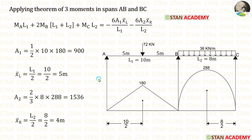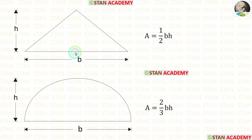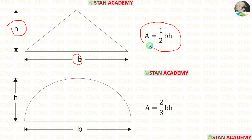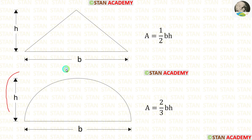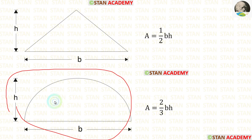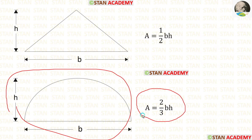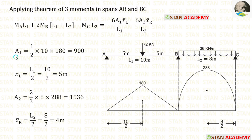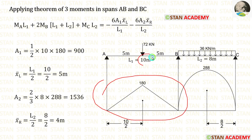Now let us see the formulas to calculate the areas. If a triangle is having breadth B and height H, the area formula is 2/3 × breadth × height. For a parabola made by a second-degree curve, the area formula is also 2/3 × breadth × height. For this triangle, the breadth is 10 meters and the height is 180. We can apply these values and finally we are getting 900.